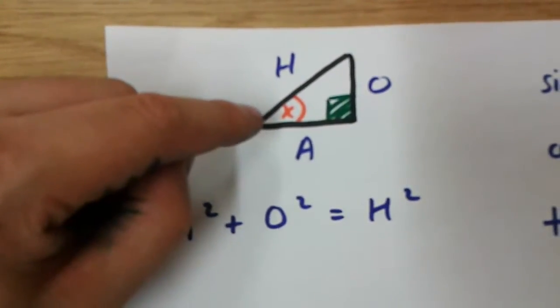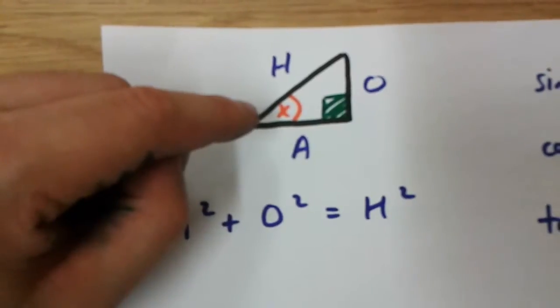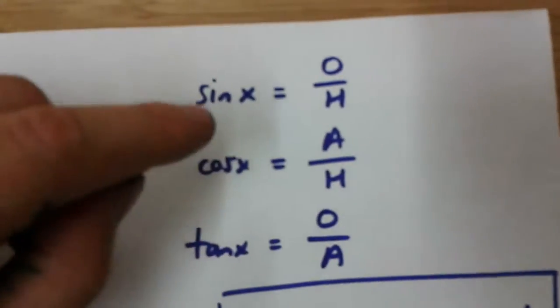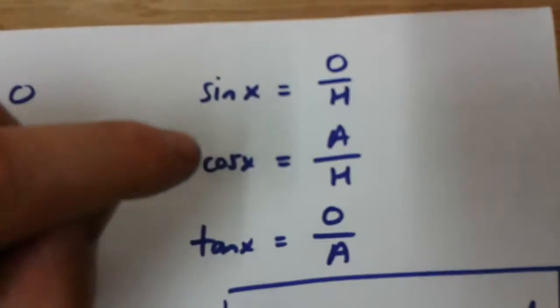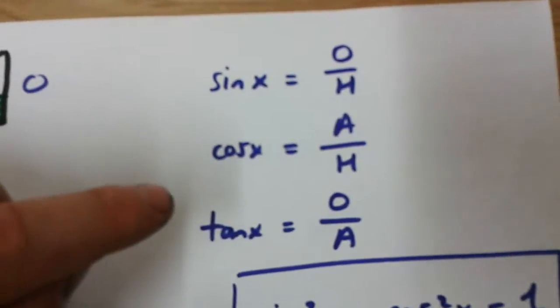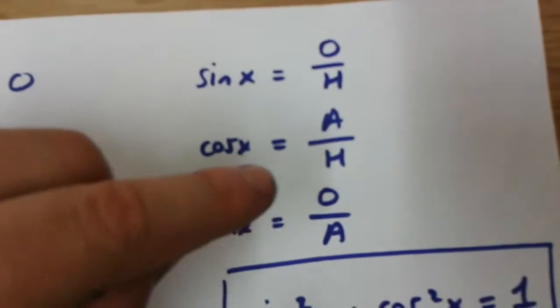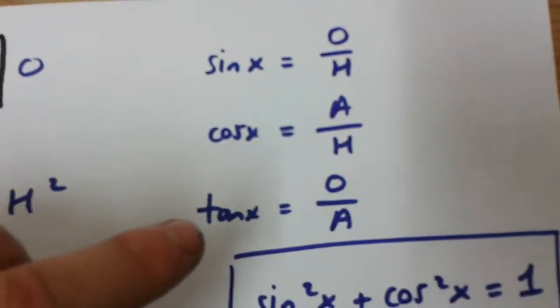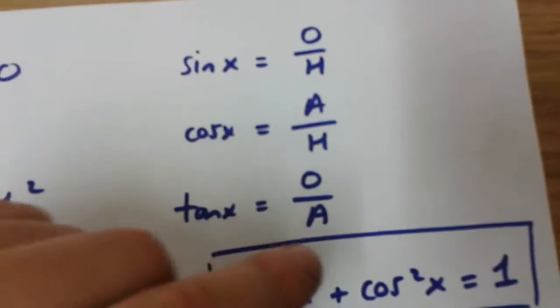This angle here is angle x. What you should know is that sin x is equal to opposite over hypotenuse, cos x is equal to adjacent over hypotenuse, and tan x is equal to opposite over adjacent.